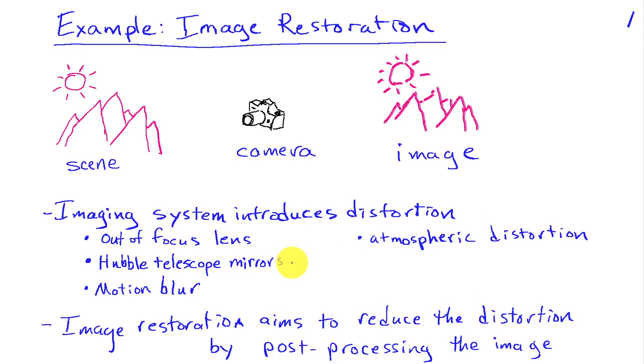There was a famous example with the Hubble telescope when it was first launched. The mirrors weren't ground properly and so the first images that came back had a lot of distortion. By measuring the errors in the mirrors, it was possible to recover or restore the images, at least to a large extent, from those improperly ground mirrors.